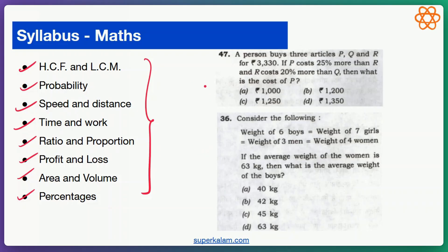For example, here is a percentage question: a person buys three articles P, Q, and R for 3300. If P costs 25% more than R and R costs 20% more than Q, then what is the cost of P? This will look very difficult if you are from a humanities background, but we will solve this together and make it quite easy.